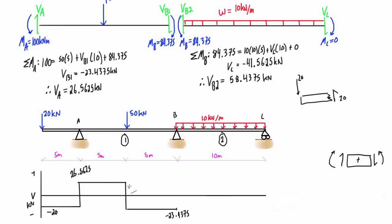Looking at that jump, it should equal the magnitude of the point load: 26.5625 + 23.4375 = 50 kN — which matches the 50 kN point load exactly. That's a nice little check that we've done this correctly.